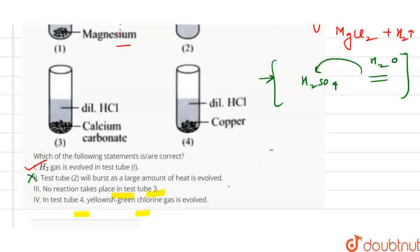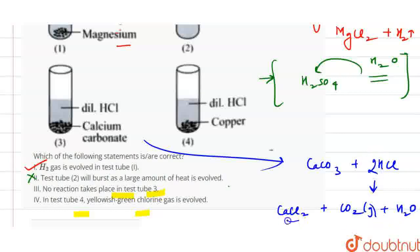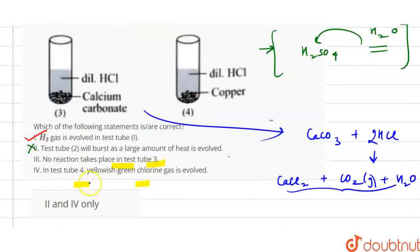Next statement, let's see. Dilute HCl reacts with calcium carbonate. The statement says no reaction takes place in test tube 3, which is incorrect. When calcium carbonate reacts with dilute HCl, it forms CaCl2, CO2 gas evolves, and water is present. So three things form. The statement says there is no reaction, so this is also incorrect.